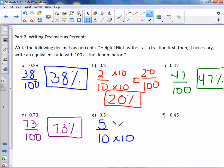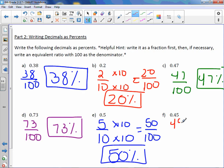0.5 is really 5 tenths, but the denominator is not 100. Let's make it 100 by multiplying top and bottom by 10. We would get 50 over 100, or 50%. Letter F is 45 hundredths. The denominator is 100, which means the percent is just 45%. Now do you notice a pattern?